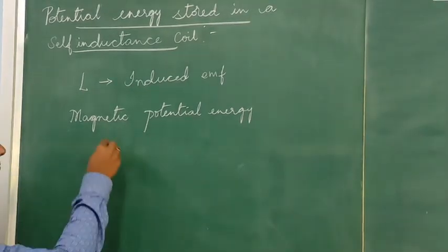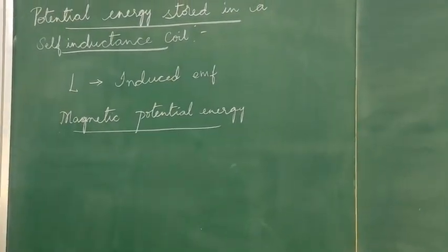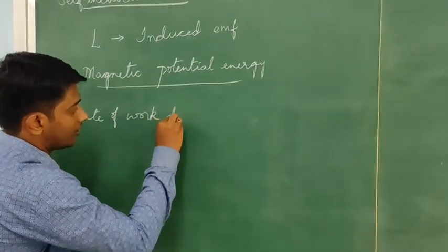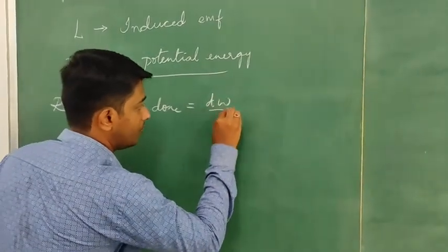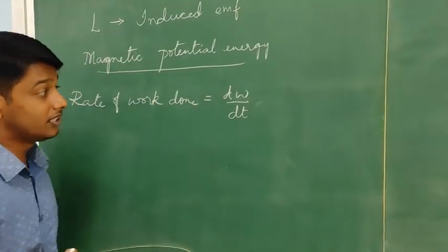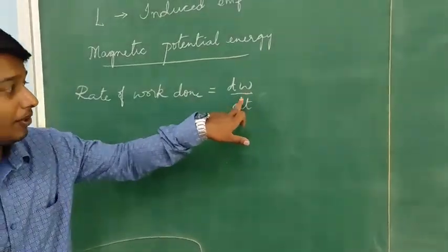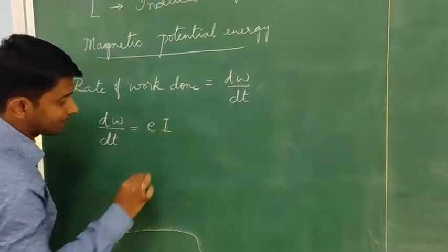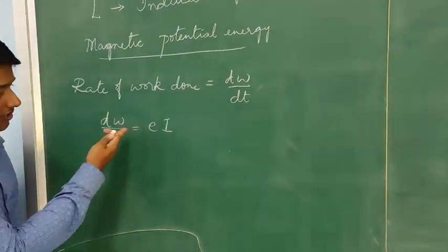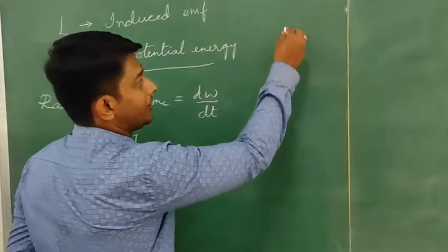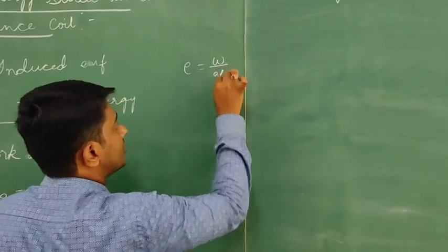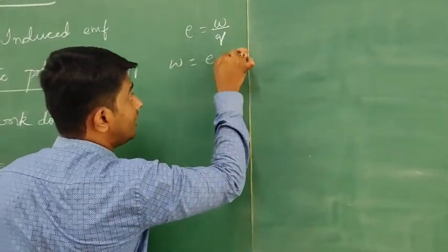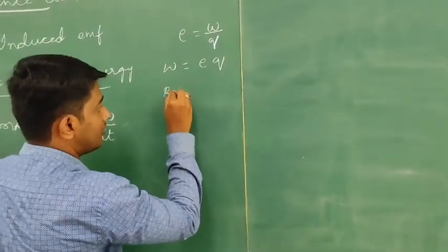The work done is stored in the form of magnetic potential energy in the self-inductance coil. The rate of work done is given by dW/dt. We need to find the value of dW/dt, that is the rate of work done. The rate of work done dW/dt is given by E·I. EMF E is given by work done per charge, that is E = W/Q. So work done is given by W = E·Q.